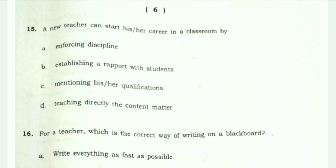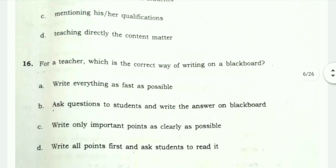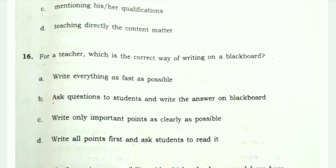Question 16: Which is the correct way of writing on a blackboard? Options include: write everything as fast as possible; ask questions to students and write the answer; write only important points as clearly as possible; or write all points first and ask students to read. The blackboard is used only for summary work or key points, so option C is the correct answer.